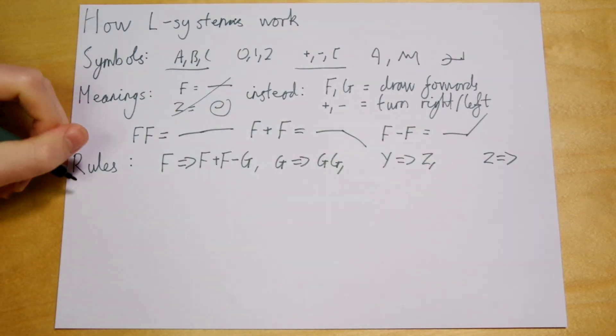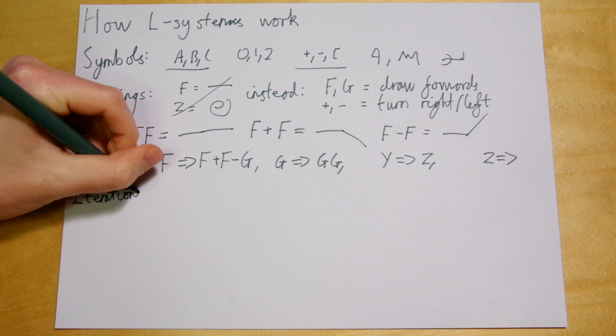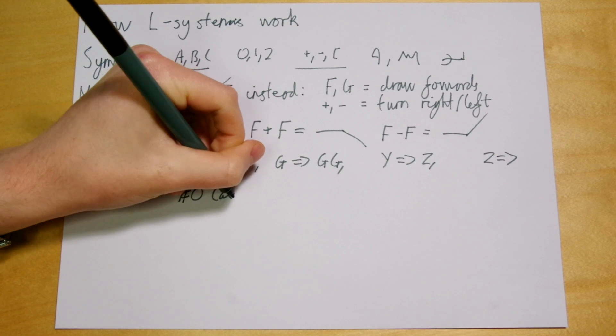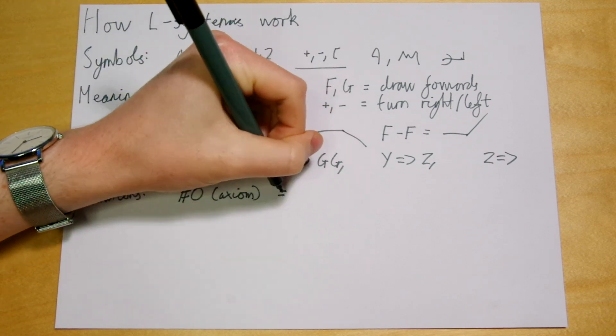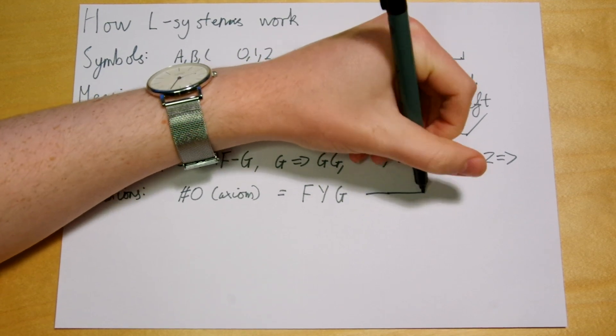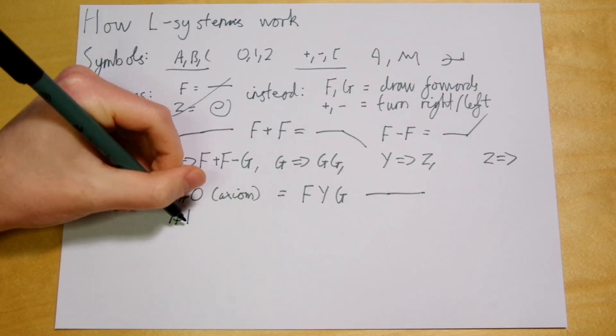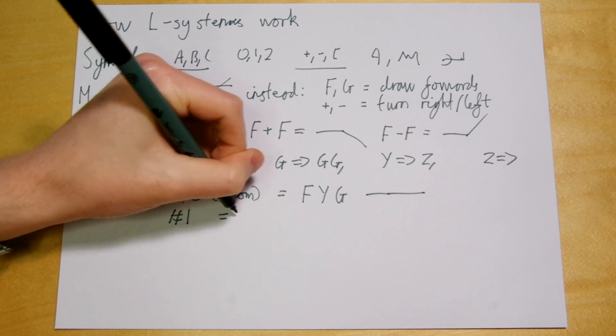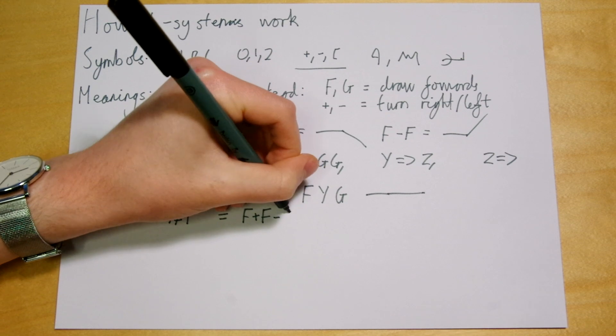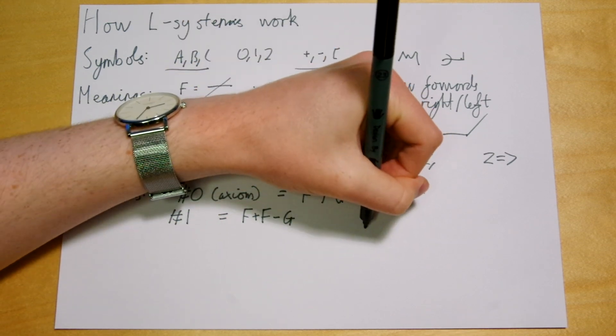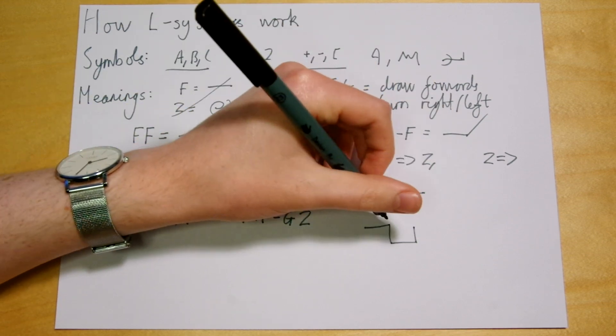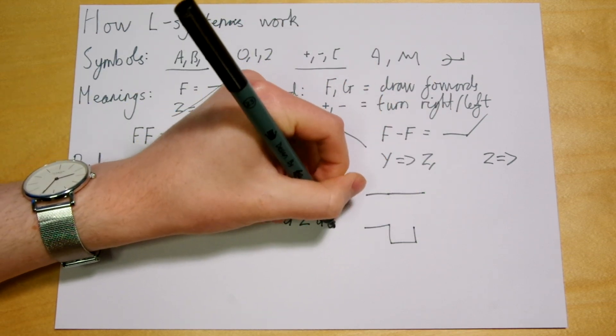The final part of a Lindenmayer system is how to use the rules. To begin with, we need a string of symbols, otherwise there's nothing to apply the rules to. So we'll have to choose a string. We call this the axiom, the zeroth iteration. So if we want to generate the first iteration from the axiom, we look at each symbol in the axiom and try and apply a rule to it, if there is a rule starting with that symbol. So the first iteration has F plus F minus G from the F, then a Z from the Y, and finally two G's from the G.